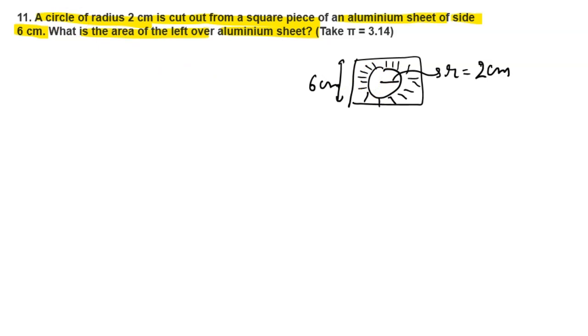So first of all, we write here: remaining area equals area of square minus area of circle.